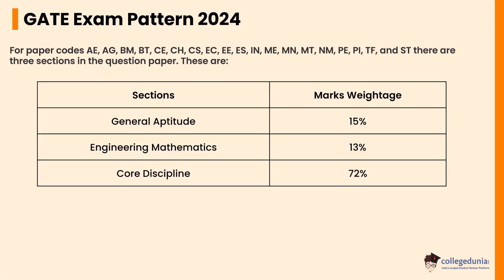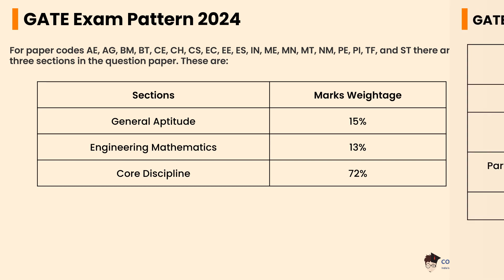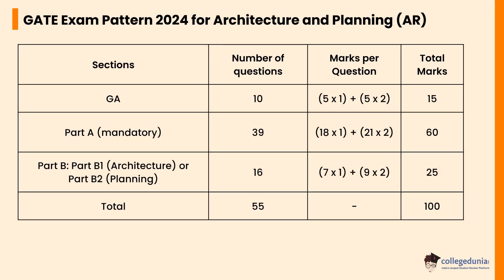For the paper codes AE, AG, BM, BT, CE, CH, CS, EC, EE, ES, IN, ME, MN, MT, PE, PI, TF, and ST, there are three sections in the question paper: General Aptitude, Engineering Mathematics, and core discipline. General Aptitude carries a weightage of 15 percent, Engineering Mathematics carries 13 percent, and core discipline carries 72 percent.